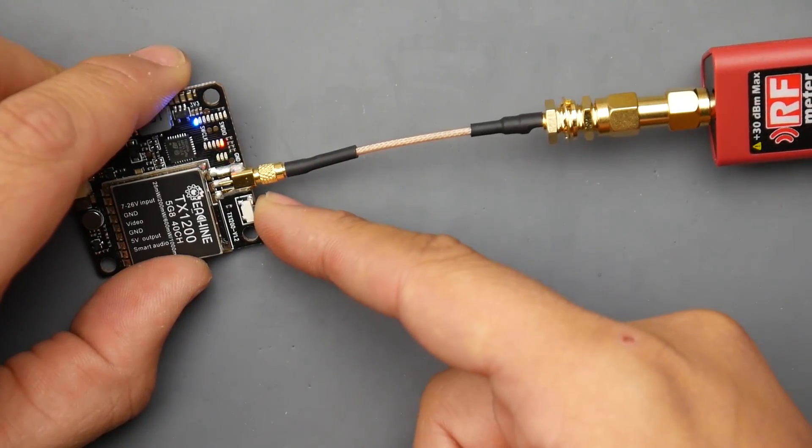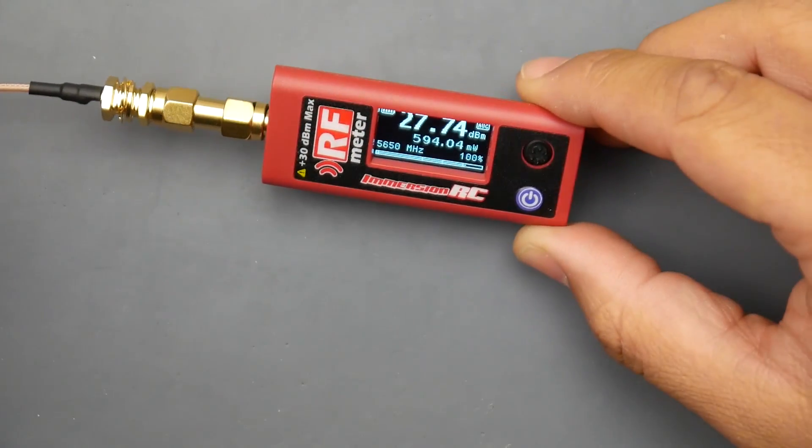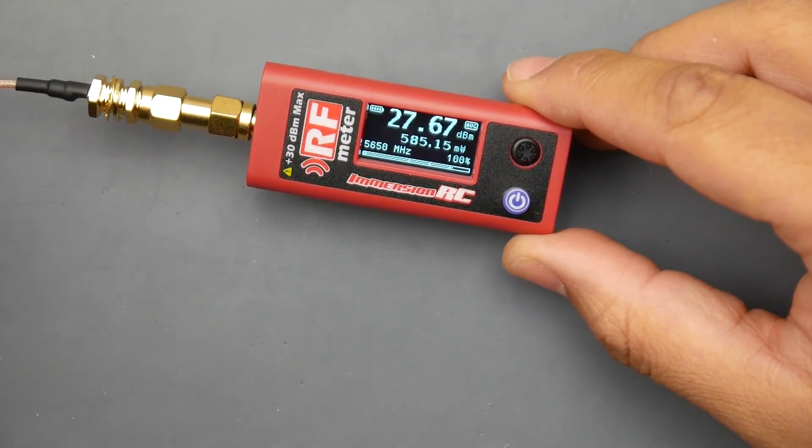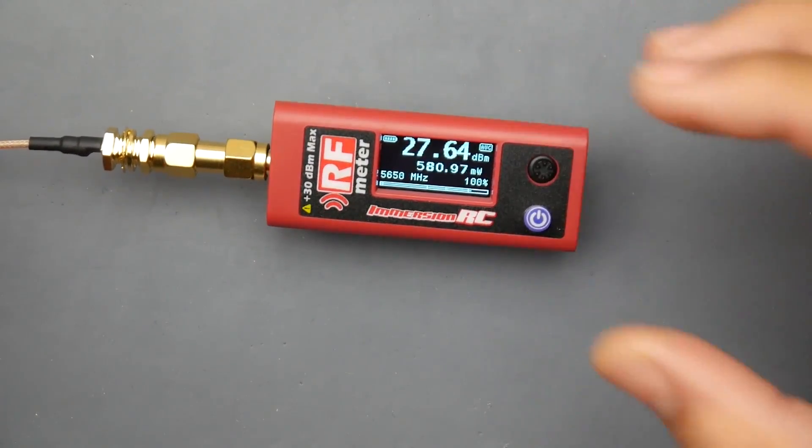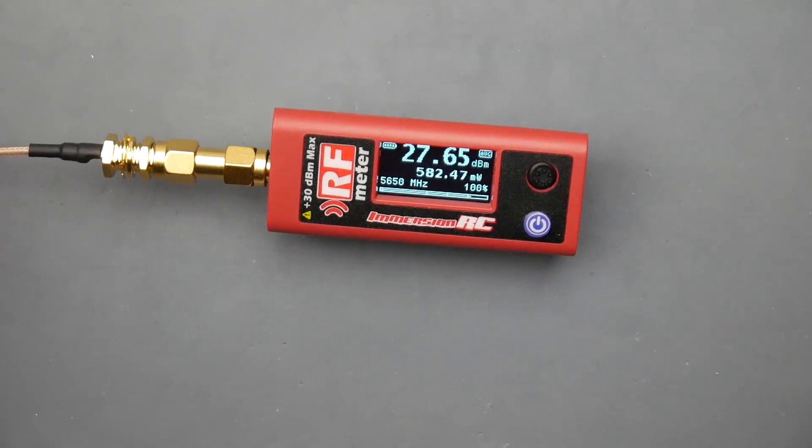Now we're at 600 milliwatts and it is outputting roughly 600 milliwatts, almost. It's 585 milliwatts, so it's close. But now it's the moment of truth: does this output actually one watt? So let's go ahead and get an idea.